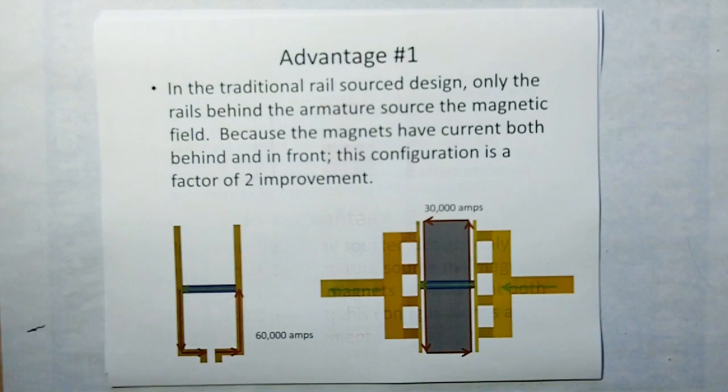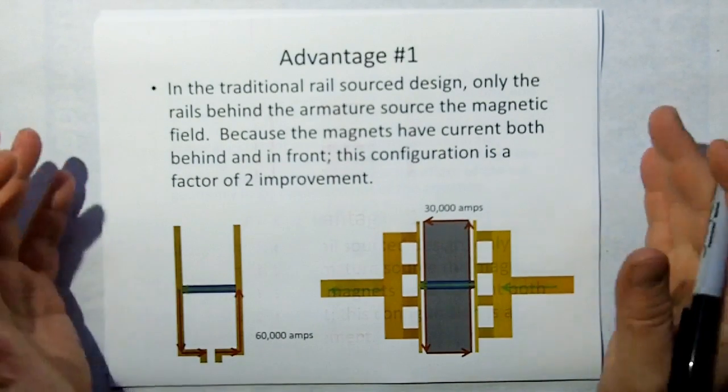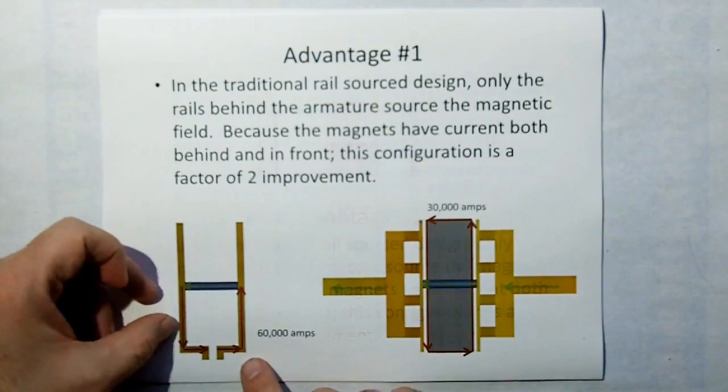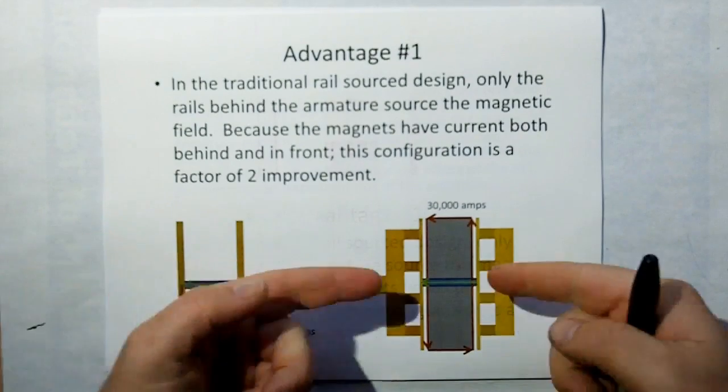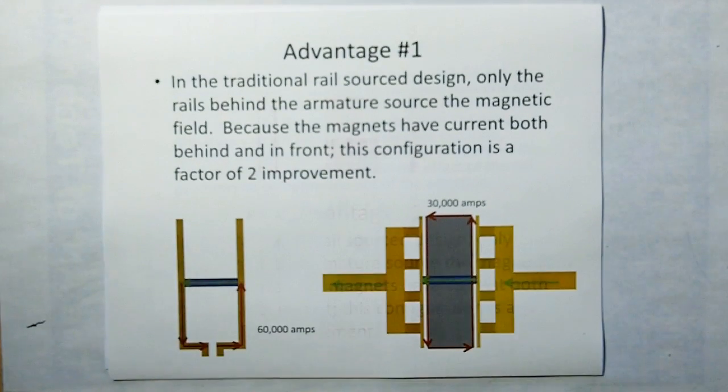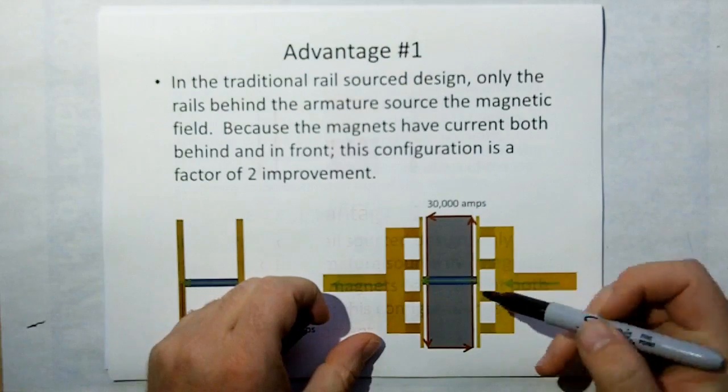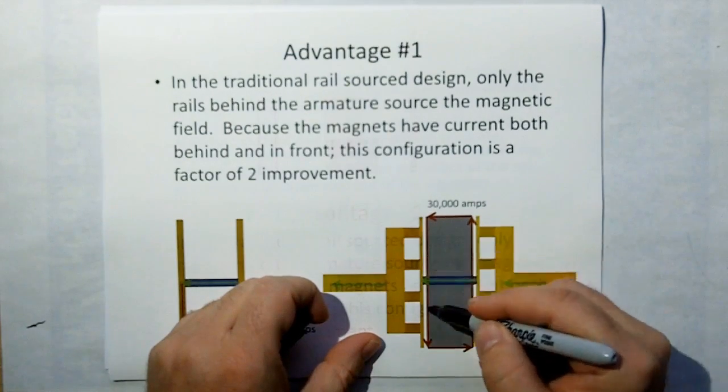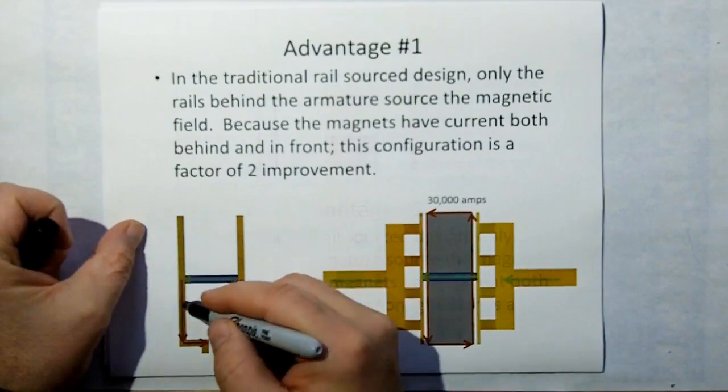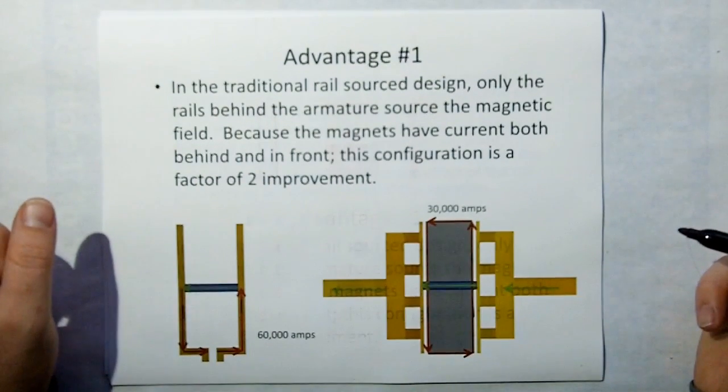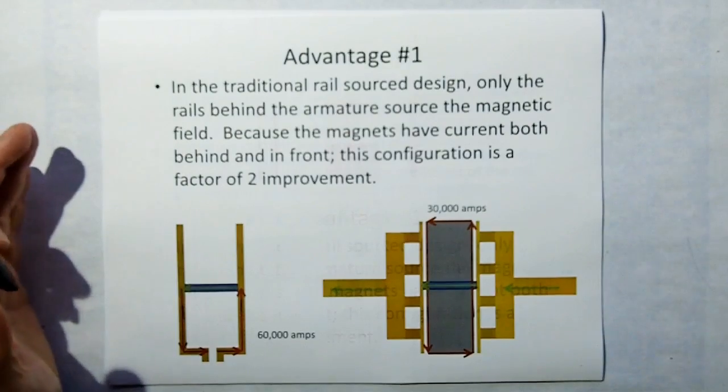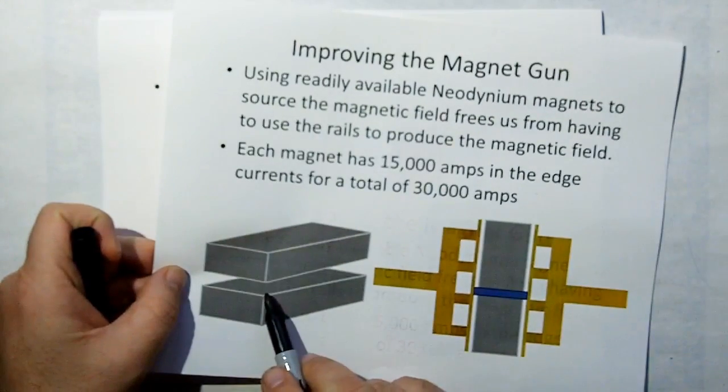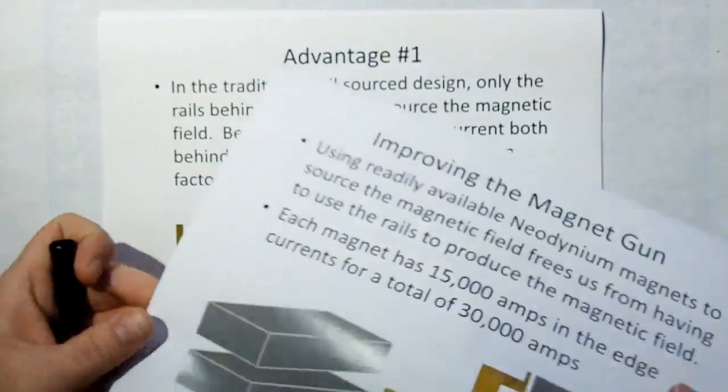And also the other problem with the classic railgun design is only the rails behind the armature source the field. When we're using a permanent magnet, the magnetic field present at the armature is from all four points of the compass here, not just the two behind. So we get a factor of two improvement right off the bat. And then if you look at this, we're going to have magnets on the top and the bottom with the armature sandwiched in between. So don't be confused by this picture here.